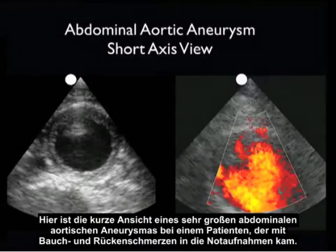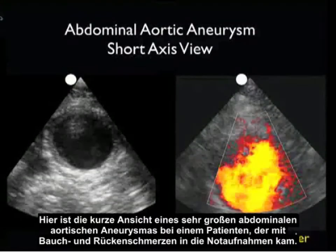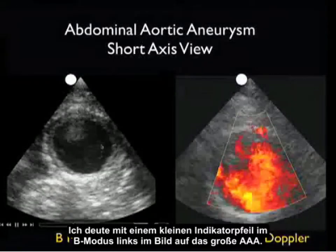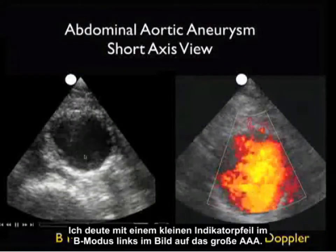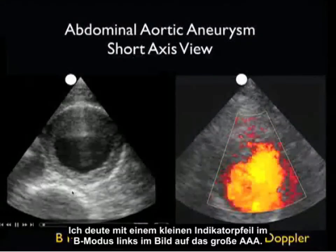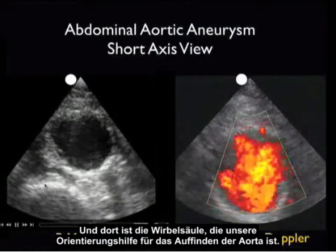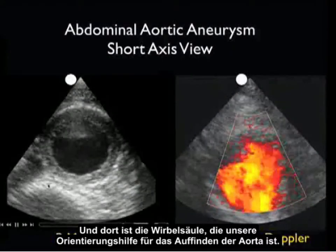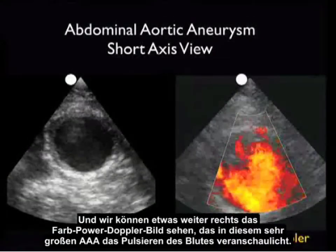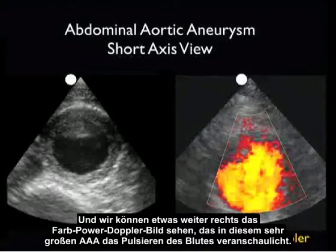Here's a short axis view of a very large abdominal aortic aneurysm in a patient who presented to the emergency department with abdominal and back pain. With a small indicator arrow, I'm showing in the B-mode image towards the left the large AAA, and there's the spine, which is our landmark for determination of the aorta. We can see the color power Doppler image towards the right showing pulsations of blood within this very large AAA.